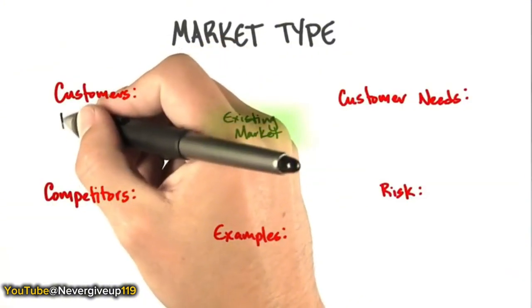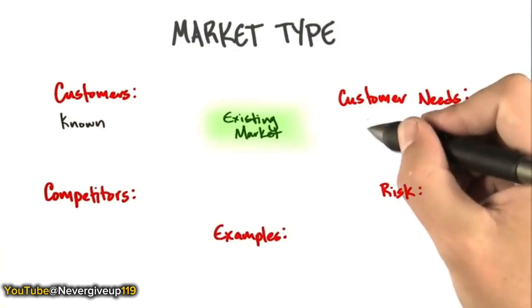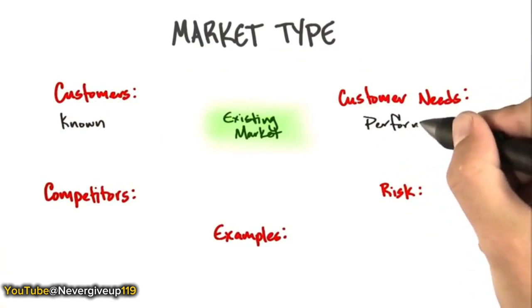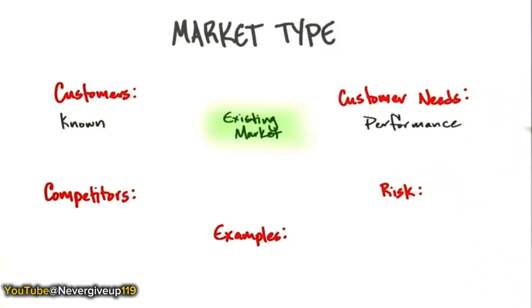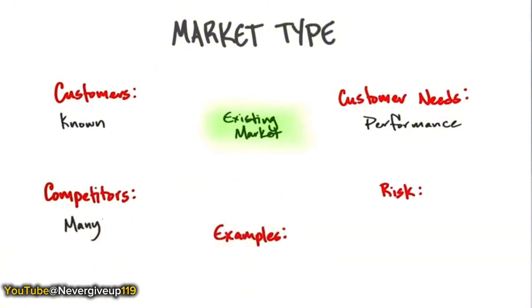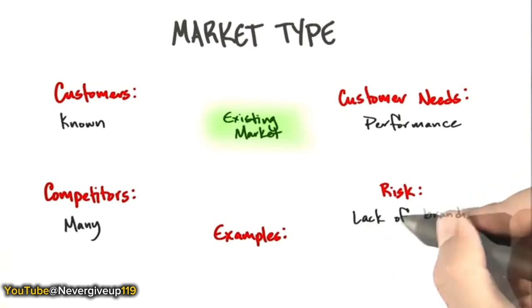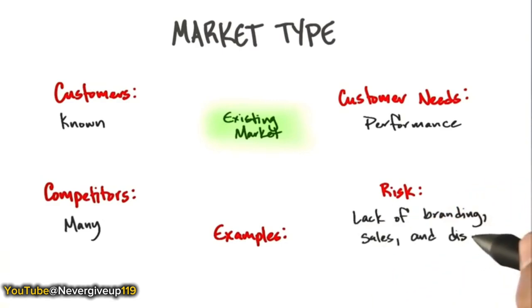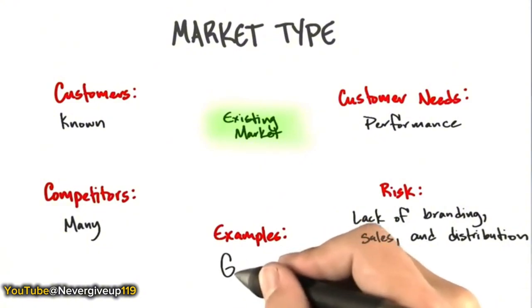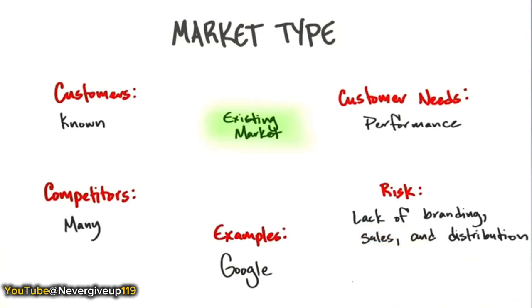In an existing market, the customers are known — they exist. You can ask what they really care about in terms of gains and pains. By definition, there are many competitors. Your risk is lack of branding, lack of sales, lack of distribution — and sometimes your product really doesn't live up to its claims. Example: Google. It's an existing market. Go ahead and try to enter the search business today — there's already a dominant player.